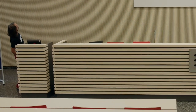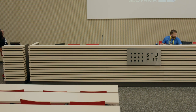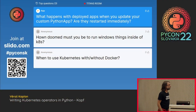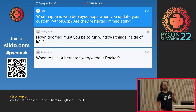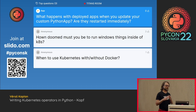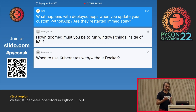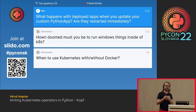Question: What happens with the deployed apps when you update your custom Python app — are they restarted immediately? It's a very good question. With the code which is on GitHub, the Python app isn't restarted. But if you want that to happen, it's pretty easy. In KOPF you can say: please, when the custom Python app is changed, destroy the old job and create a new one — and you are there. It's possible, but it doesn't work at the moment in the current code. But it can be done.